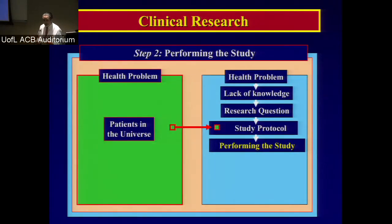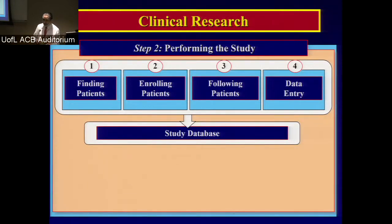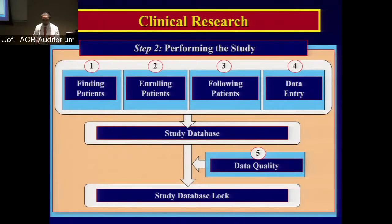Once planning is finished, everything is approved, the protocol is approved, and you have your database — now we move to performing the study. For a prospective study, you find and enroll patients, follow them if needed, do the data entry, and everything goes into the database. In this process there is a critical aspect: data quality, making sure your data is solid. After some period of time we say we have enough quality data, we lock the database, and we finish the performing phase.